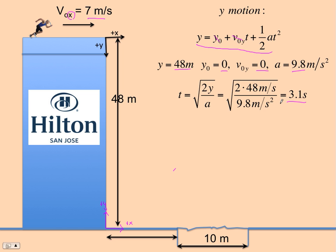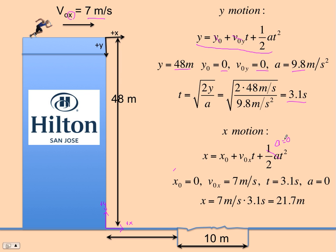And so now we look at the x motion to see how far we go. Are we going to make it to the pool? And it's the same equation, but this term here I'm usually not going to write because the acceleration in the x direction is zero for a projectile motion. And so the initial x is zero, the initial x velocity is seven, and the time 3.1 seconds, and again the acceleration is zero. And so we go 21.7, so we easily make it.